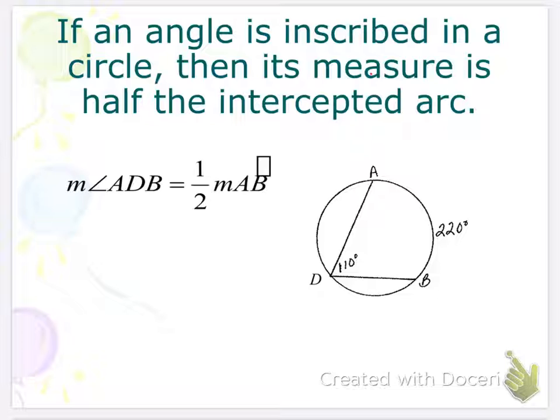If an angle is inscribed in a circle, then its measure is half the intercepted arc. So on my page, I drew, if you're going from arc to angle, you're dividing by 2. If you're going from angle to arc, you multiply by 2. So the arc is going to be the bigger one.